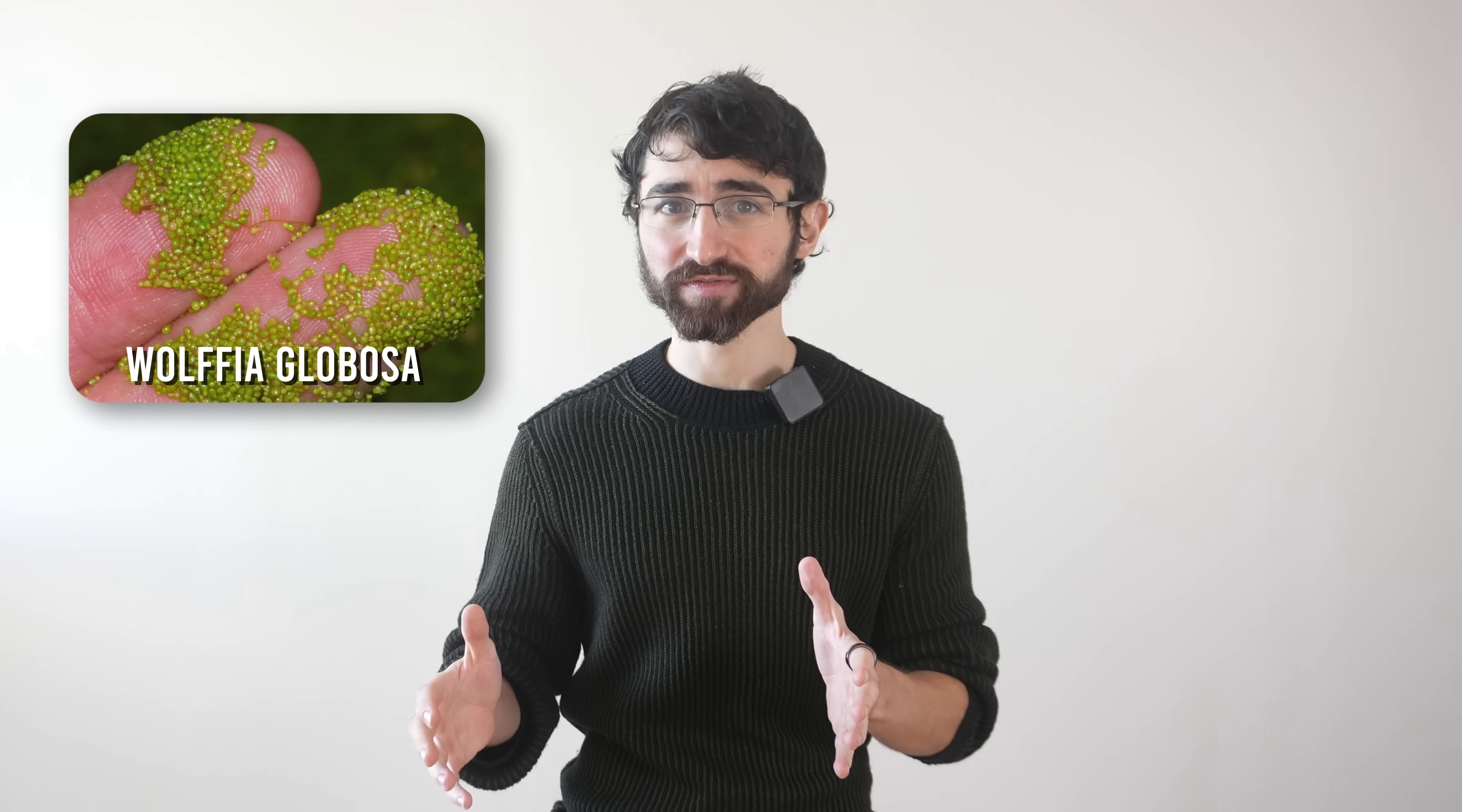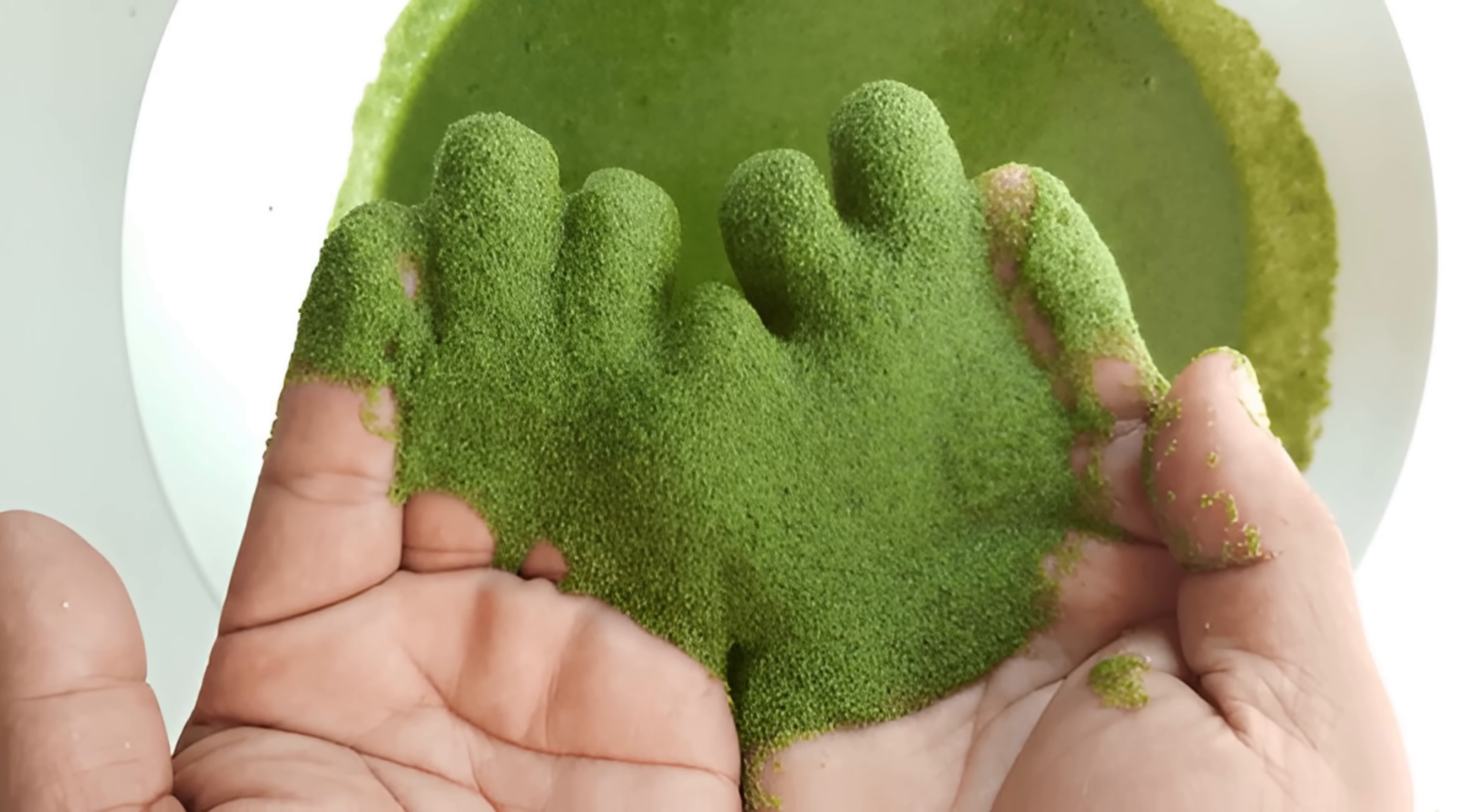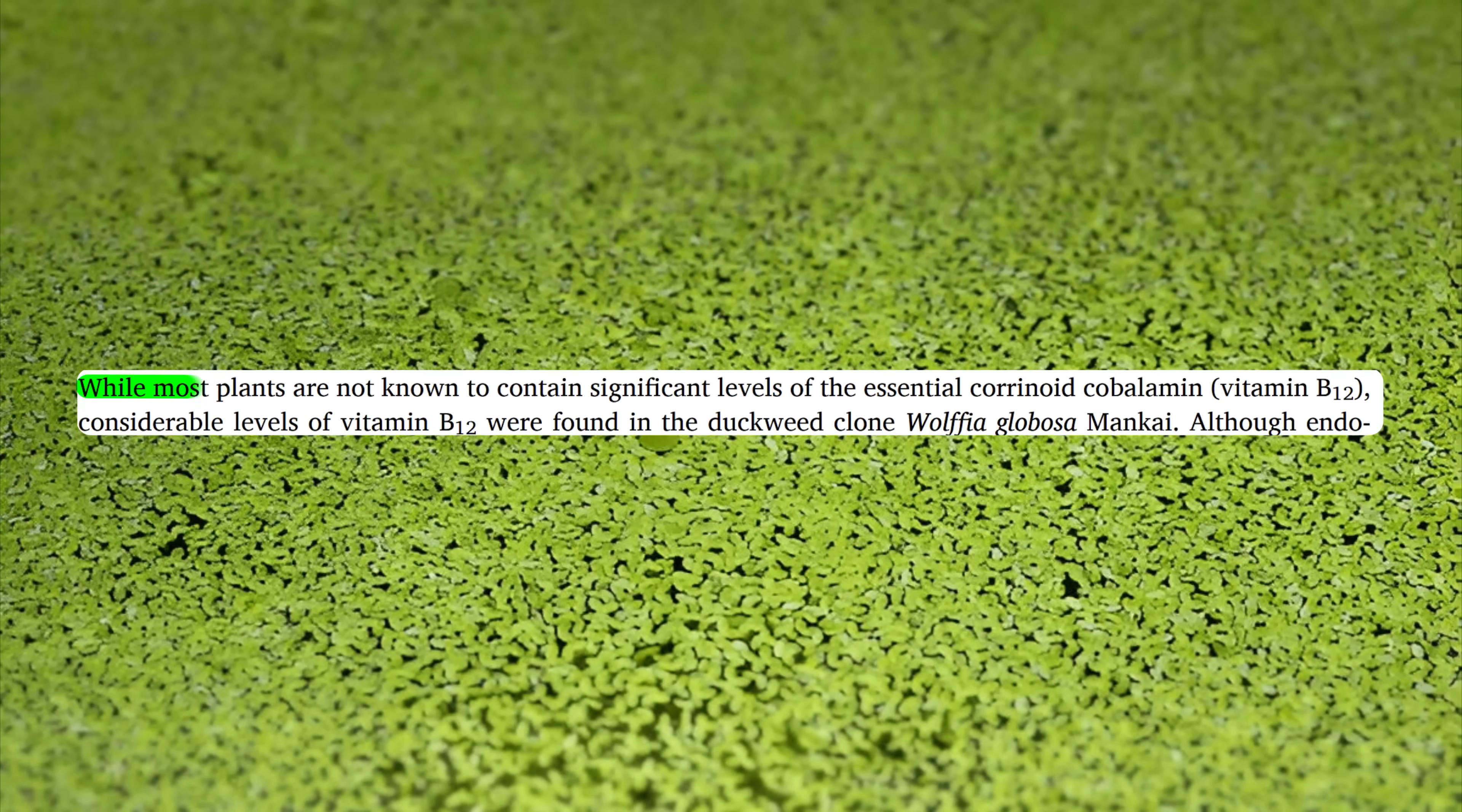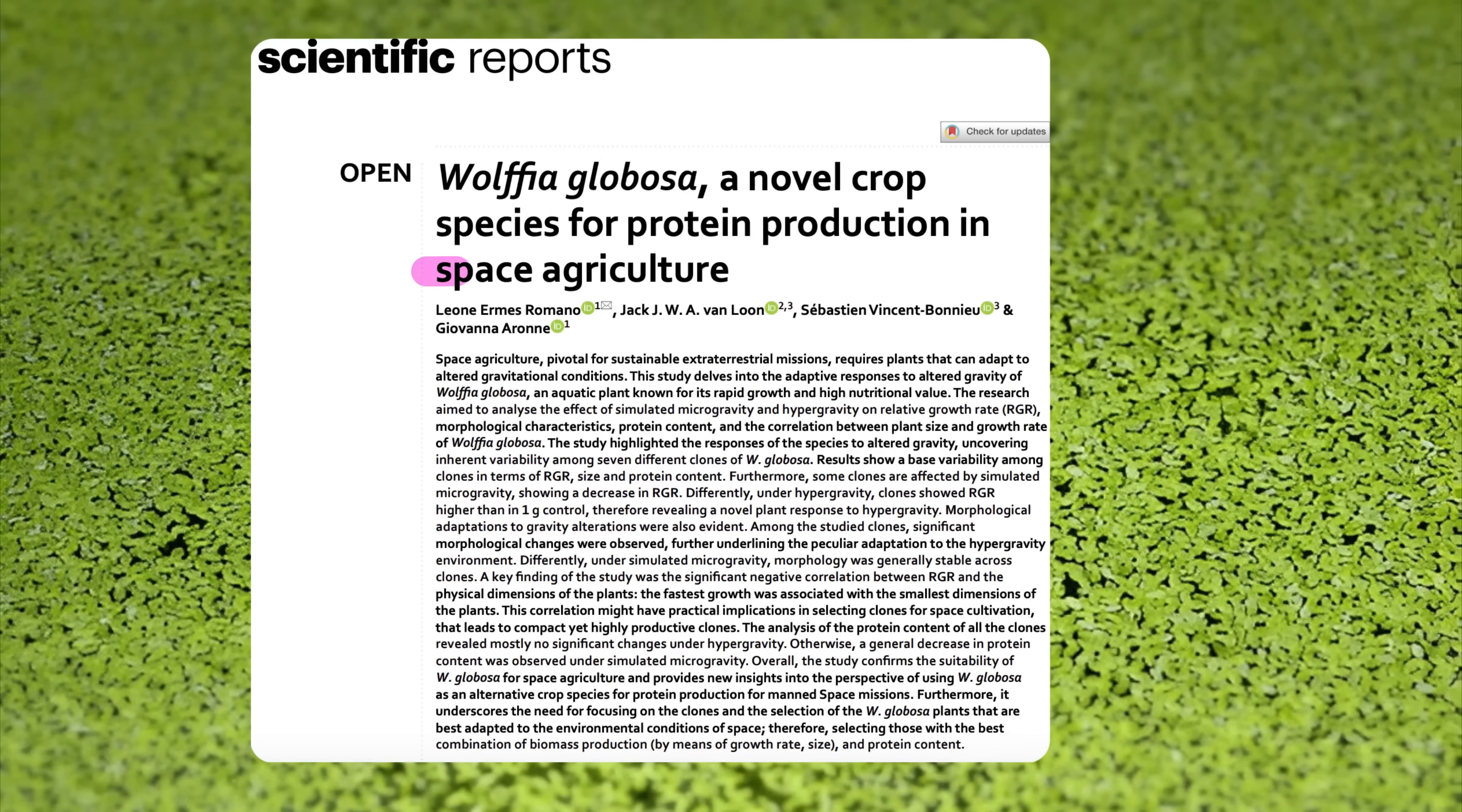On Wolfia globosa, this is a really interesting vegetable that I'd never heard of before. It's the smallest known flowering plant. It's relatively high in protein. It's actually a good source of B12, which is unusual for plants, and it's being studied for space agriculture as a protein source. That's why I'm calling it a space vegetable.